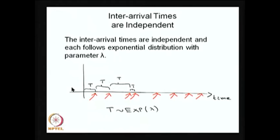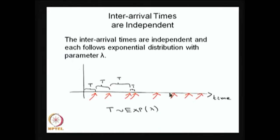Whenever arrivals follow a Poisson process, the inter-arrival times — denoted as random variable T (or X₁, X₂, X₃, X₄, …) — follow an exponential distribution with the same parameter λ, and all inter-arrival times are independent. That means these are IID random variables, each following exponential distribution with parameter λ.